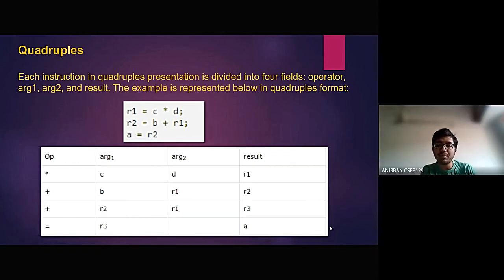Here, we have taken the example which is shown in the earlier slide. That is, r1 equal to c multiplied by d, r2 equal to b plus r1, and a equal to r2. And we have converted the three-address code into quadruples in the below diagram. In the diagram, we have taken four columns for operator, argument 1, argument 2, and result.